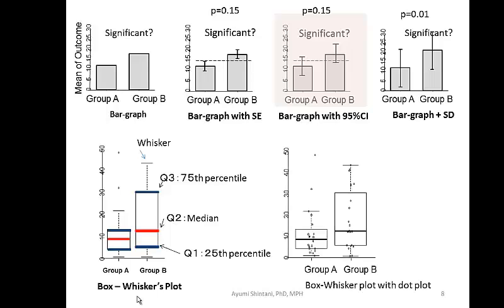More recently, reviewers are asking authors to simply show the data. It's a good idea to consider a dot plot combined with a box-and-whisker plot. That way you're showing everything — the raw data points alongside the distributional summary.